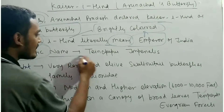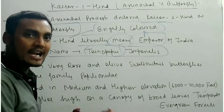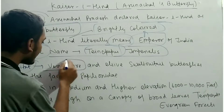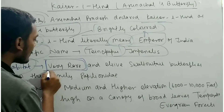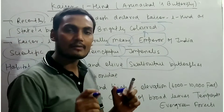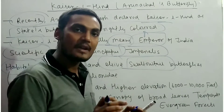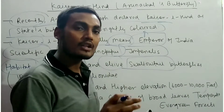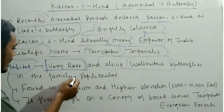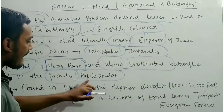The scientific name of Kesar Ayind is Tenuopalpus imperialis. It is a very rare swallowtail butterfly. Swallowtail butterflies are a group belonging to the order Lepidoptera, which includes both butterflies and moths. Kesar Ayind belongs to the family Papilionidae.